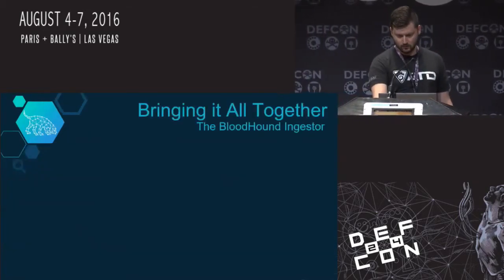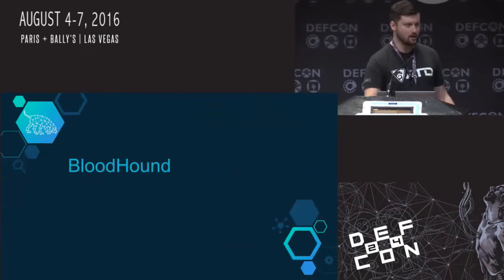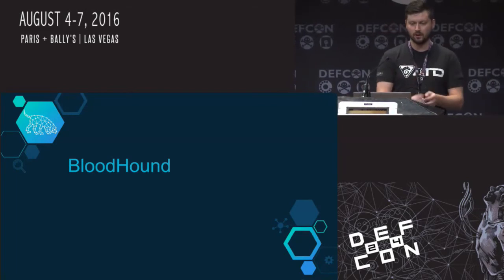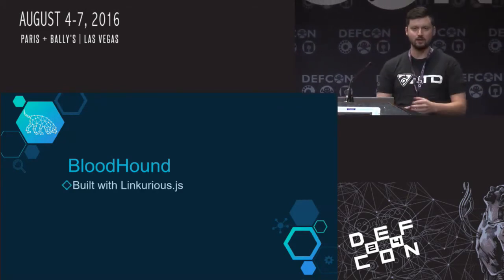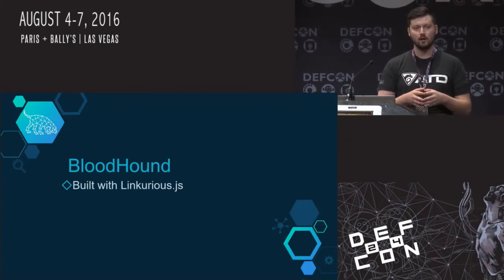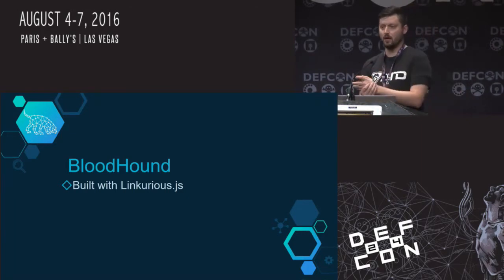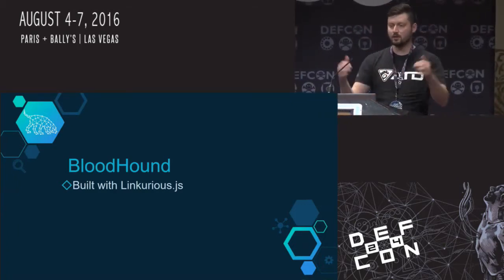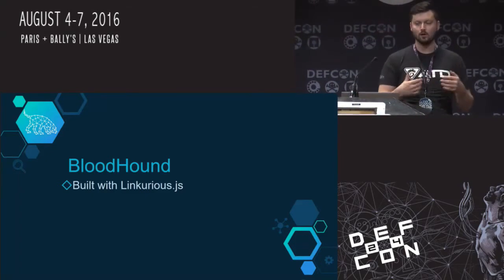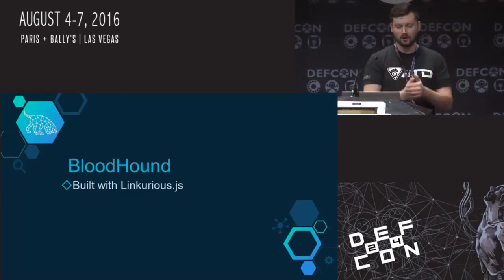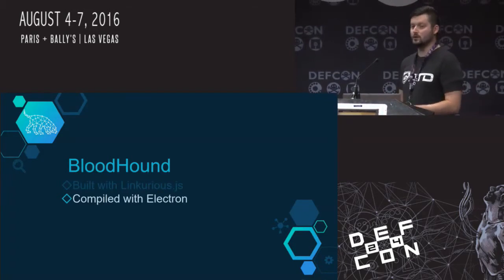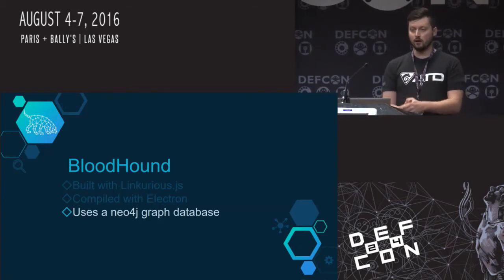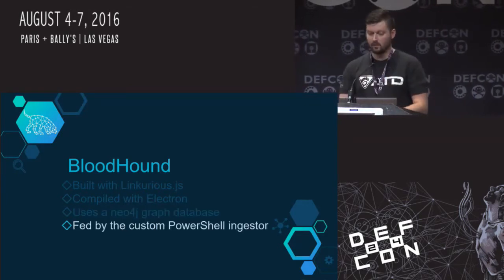A brief note on Bloodhound's architecture: Linkurious.js is the open source version of Linkurious — if you're developing a web frontend that interfaces with Neo4j, this is where you want to go. It's built on top of Sigma, abstracting away difficult JavaScript work. It's compiled with Electron, so it is cross-platform. Most importantly, we rely on Neo4j as our graph database, fed by the PowerShell ingester.